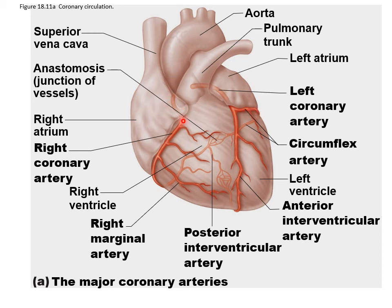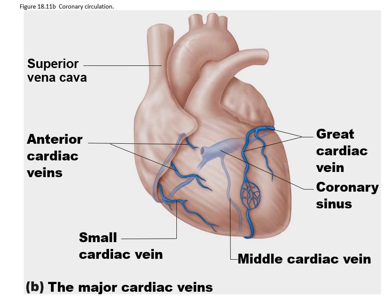The right coronary artery divides into the posterior interventricular artery, which serves the posterior ventricular walls, and the right marginal branch, which serves the lateral side of the right side of the heart. On the returning trip, vessels bring blood back into the coronary sinus: the small cardiac vein, the anterior cardiac veins, the great cardiac vein, and the middle cardiac vein all drain into the coronary sinus.